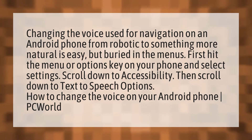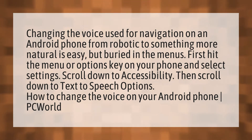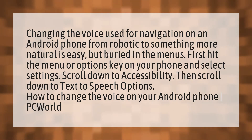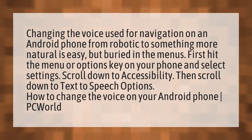First, hit the menu or options key on your phone and select Settings. Scroll down to Accessibility, then scroll down to Text-to-Speech options.